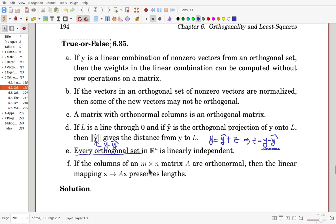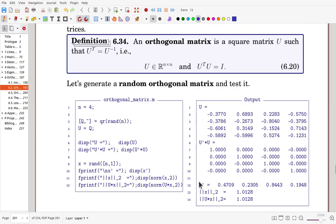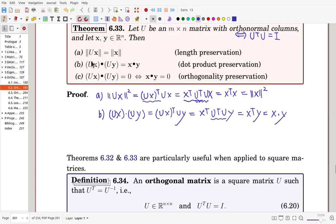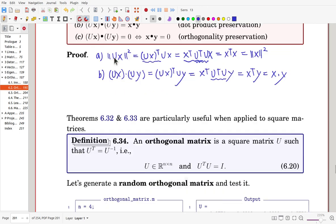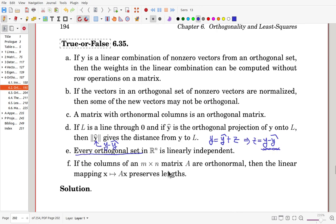If the columns of an n by n matrix A are orthonormal, then the linear mapping x to Ax preserves length. Is it true? Yeah, it is true. It's written in this way, but that is exactly the same as that one. Along with a mathematical notation, we write in this way, but it can be explained in this way. So it must be true.